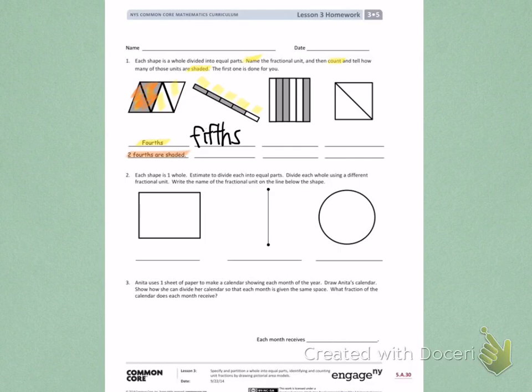When I go back to count, I can count 1 fifth, 2 fifths, 3 fifths, 4 fifths. So I can write 4 fifths are shaded.